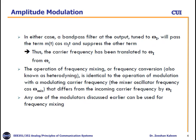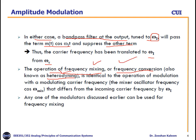In either case, at the output we need a band-pass filter tuned to frequency ωI. This will pass M(t)·cos(ωI·t) and suppress the other terms. Thus the carrier frequency has been translated from ωC to ωI. This operation is called frequency mixing, frequency conversion, or heterodyning — these three terms are similar in meaning.